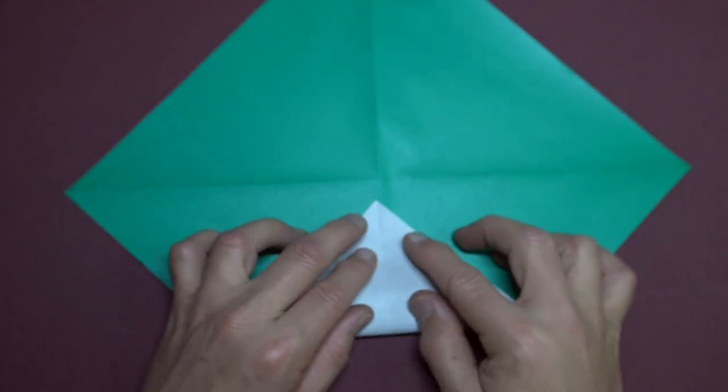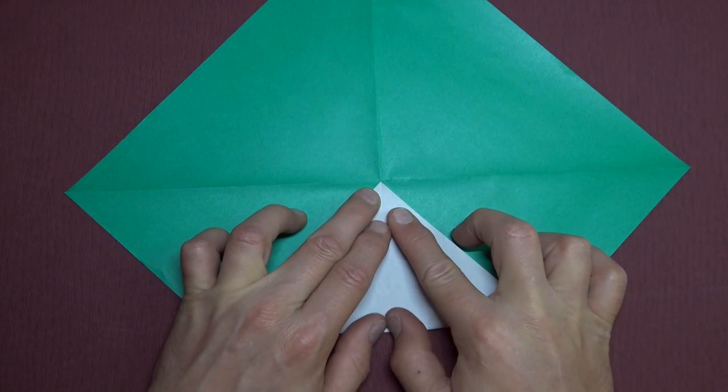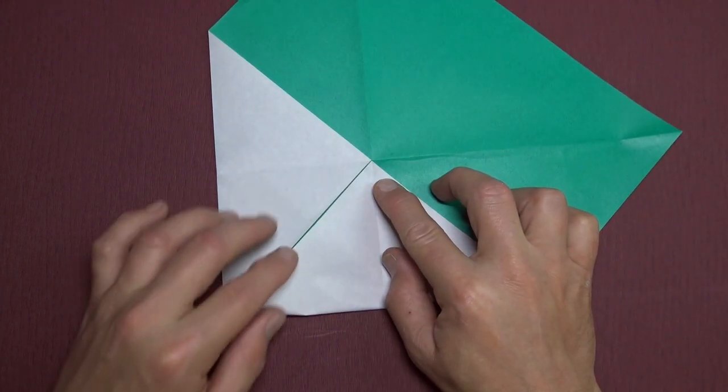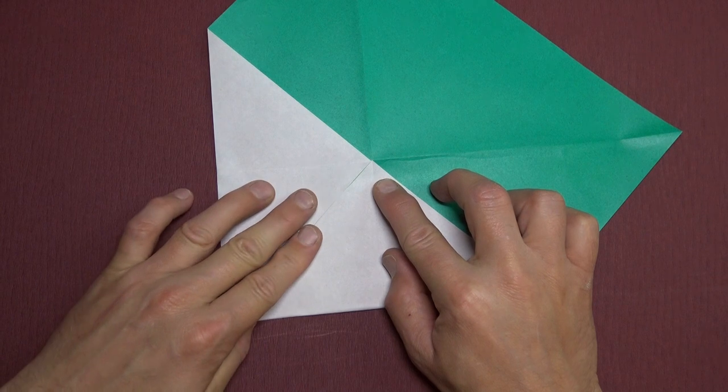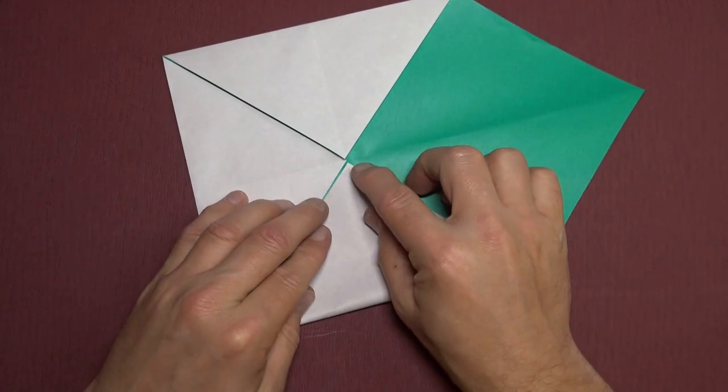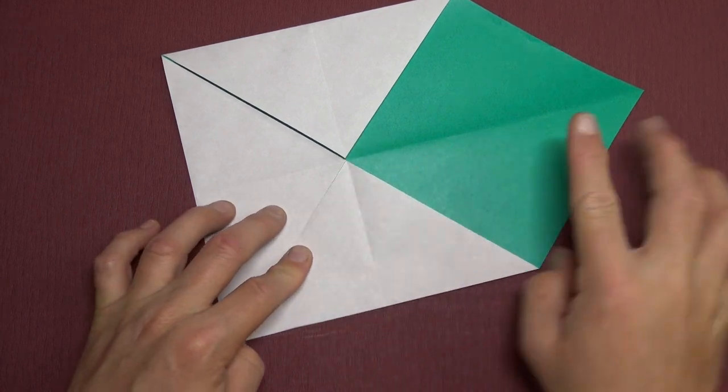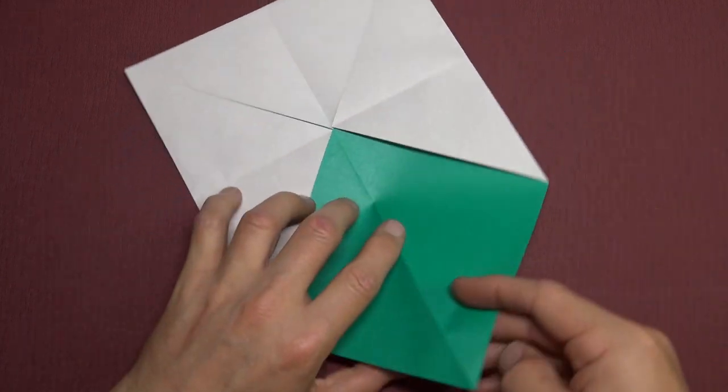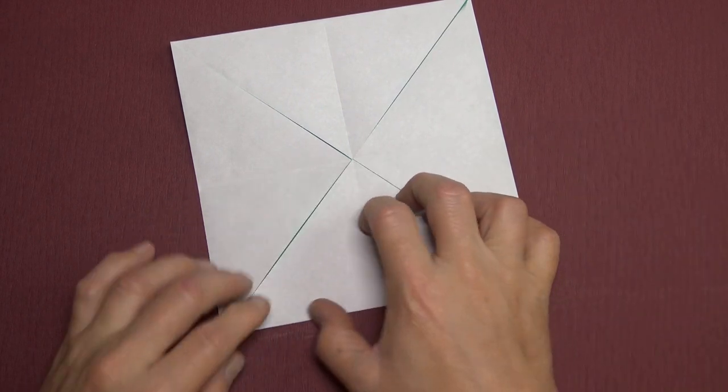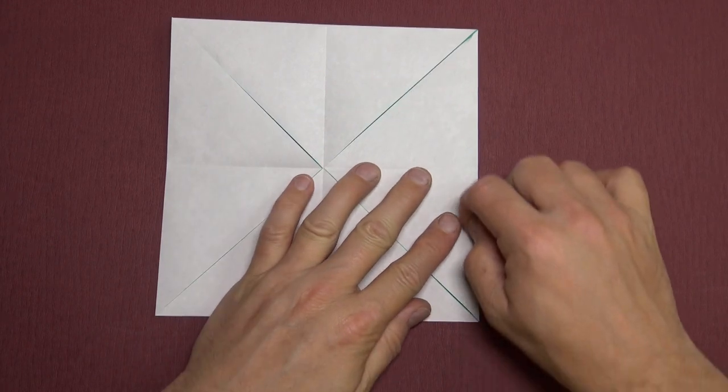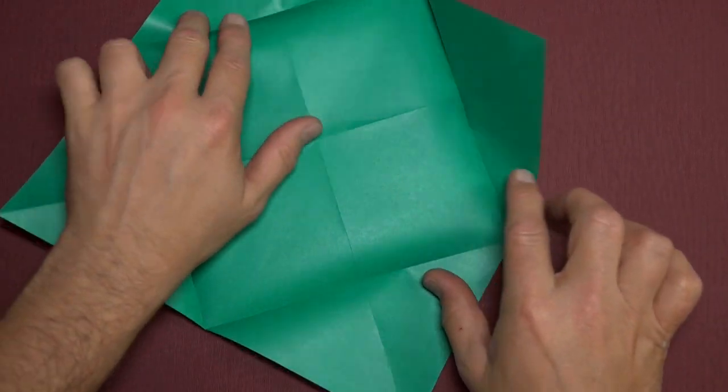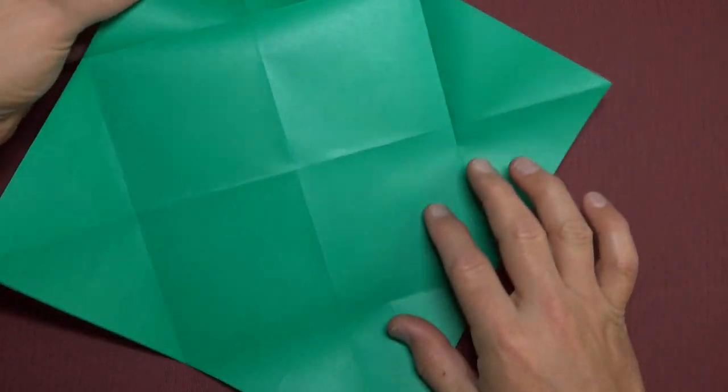Colored side up. Blintz. Fold all the corners to the middle. Unfold. Turn over.